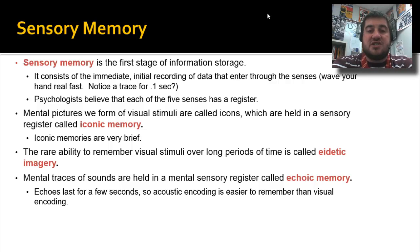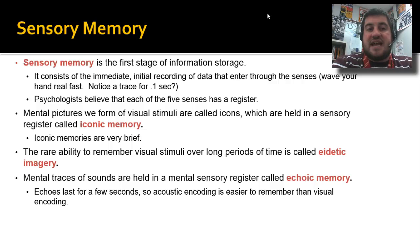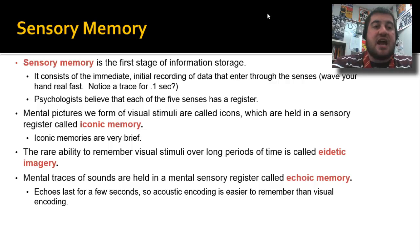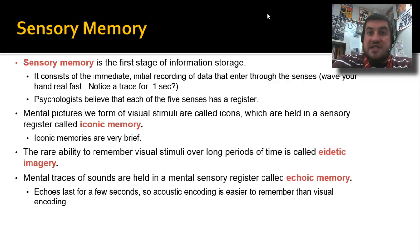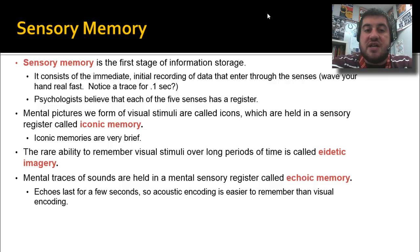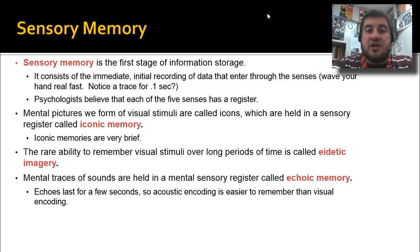Sensory memory is the first stage of information storage. We talked in the last video about encoding, storage, and retrieval — those are your memory processes. Sensory memory consists of the initial recording of data and it's very, very brief; most of it we forget immediately. Wave your hand in front of your face real fast — you can see a trace, especially in front of a TV or computer screen, for even a tenth of a second. Most psychologists believe that each of the five senses has a register: feeling, hearing, smelling, tasting, and seeing.